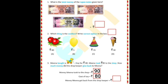Meena bought a toy duck for rupees 80. Meena took rupees 90 to the shop. How much money did the shopkeeper give back to Meena? The amount Meena took is rupees 90 and the cost of the toy is rupees 80, so Meena got back rupees 90 minus rupees 80, which equals rupees 10.